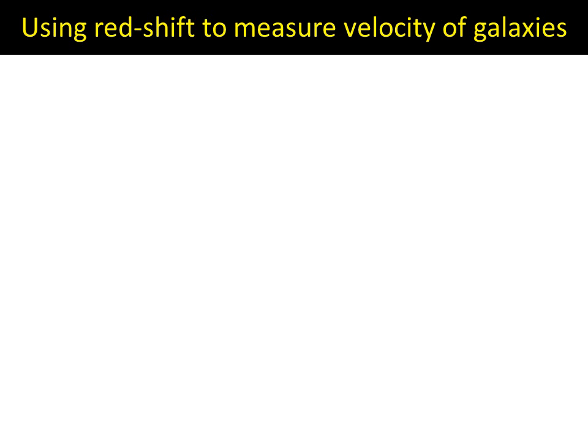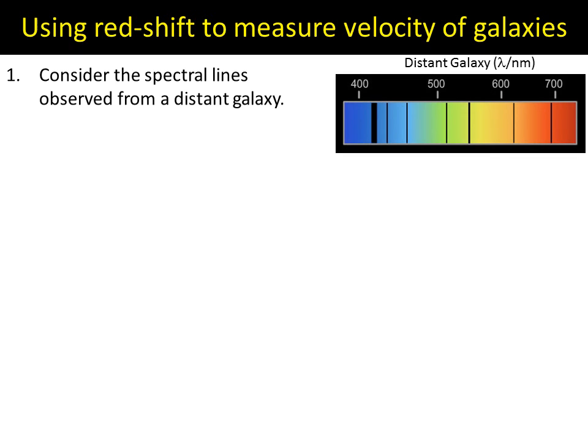We first get light from the distant galaxy and put it through a diffraction grating or prism to get a rainbow. What we see is a pattern with black lines that are really important. It's those spectral lines that allow us to do this.